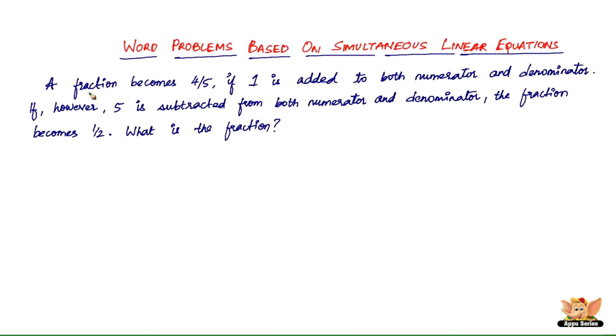It says a fraction becomes 4 by 5 if 1 is added to both numerator and denominator. If, however, 5 is subtracted from both numerator and denominator, the fraction becomes 1 by 2. What is the fraction?